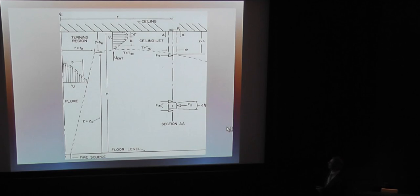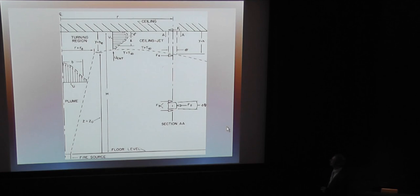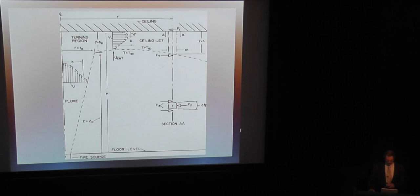Later work done here at Interflam showed that a lot of energy is actually lost in that turning, but that's the assumption made in the original model. There's a small distance below the ceiling where you have drag from the ceiling boundary layer, so the maximum velocity is somewhat below the ceiling. In many of the measurements I'll be talking about, because they were on such a large scale, we weren't able to carefully determine exactly where the maximum velocity and temperature were, so take that with a grain of salt.